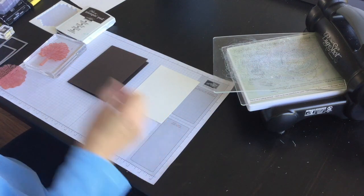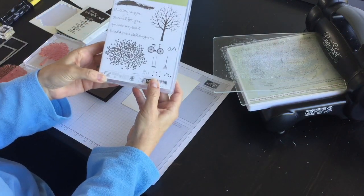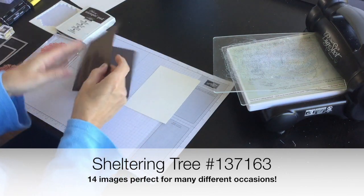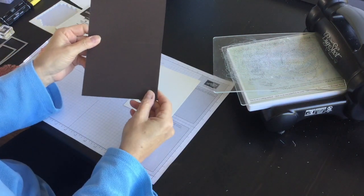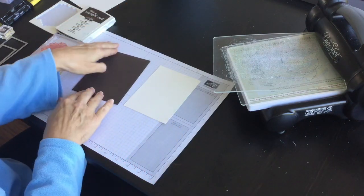I'm going to be using the sheltering tree stamp set for the images on the front of my card. My card base is going to be early espresso. I've cut it eight and a half by five and a half, scored it at the four and a quarter mark.